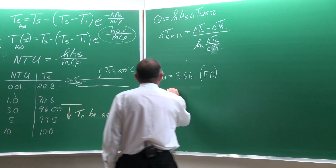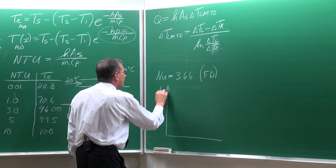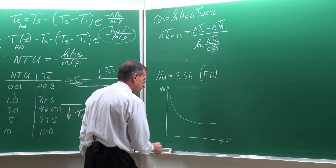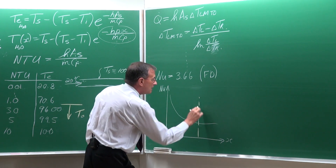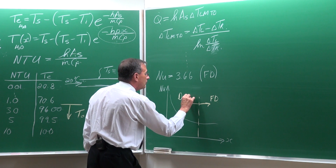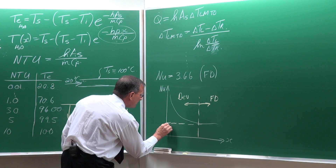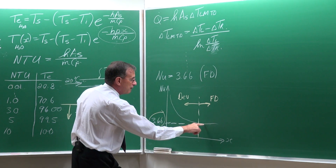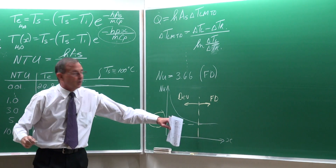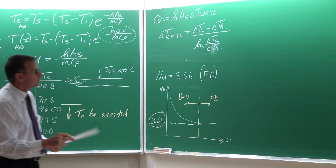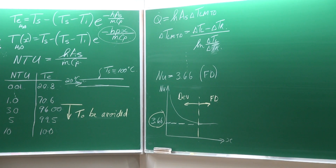Just like in the previous case, if we look at how the Nusselt number develops as a function of X, it starts high and then levels off to the fully developed value, while the developing flow region shows higher values. This Nusselt number for fully developed constant wall temperature is 3.66. Take note — it is just the fully developed part; while it is developing it will always be higher than 3.66.